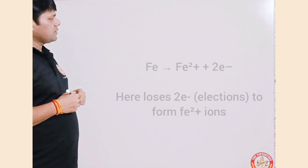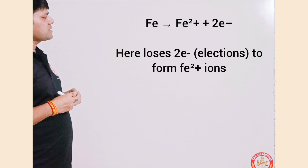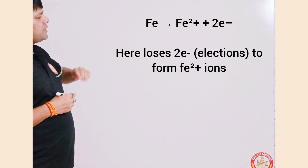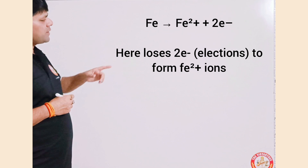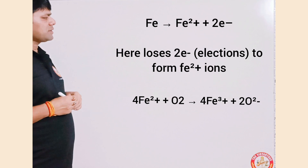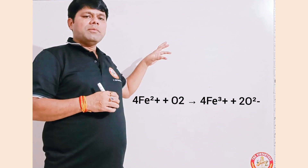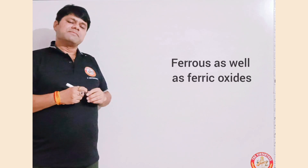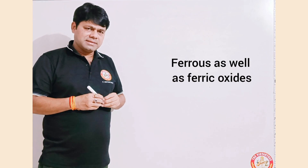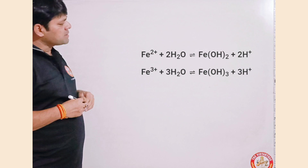This is the first reaction which takes place: Fe gets converted into Fe²⁺ as well as Fe³⁺. As you can see, it can form multiple oxides — ferrous as well as ferric oxides.